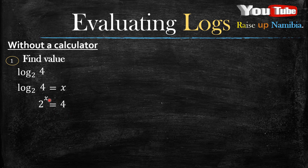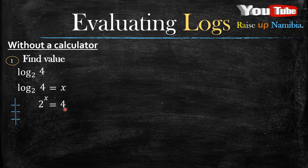If you don't know how to change to exponential form, I'll put the link down below in the description. After you change it into exponential form, make the bases the same — you follow the concept of exponential equations. So let's start with the 4: 4 divided by 2 is 2, and 2 divided by 2 is 1.